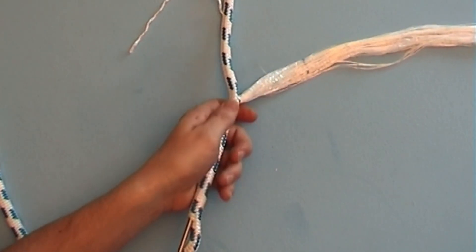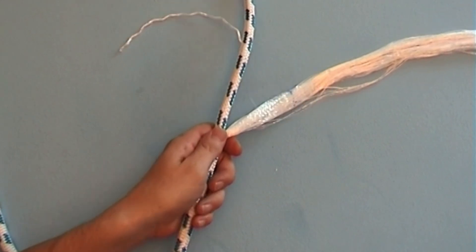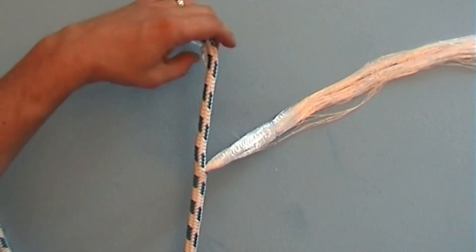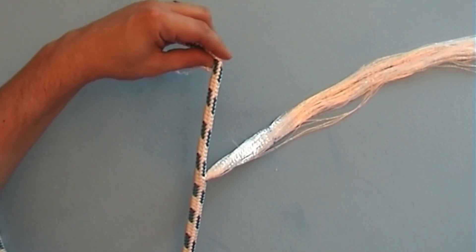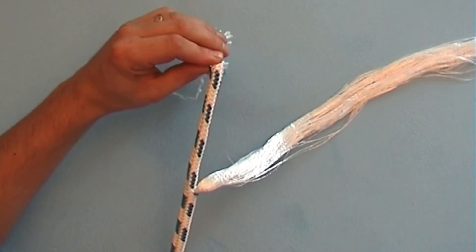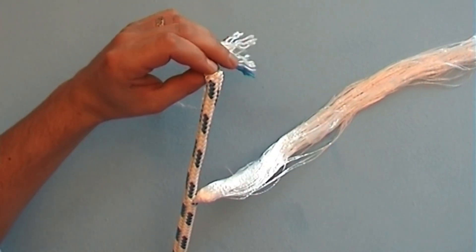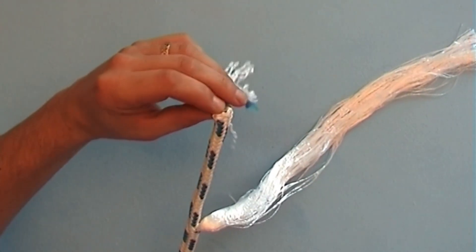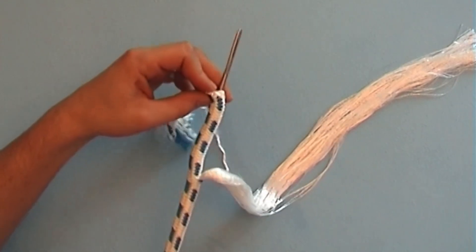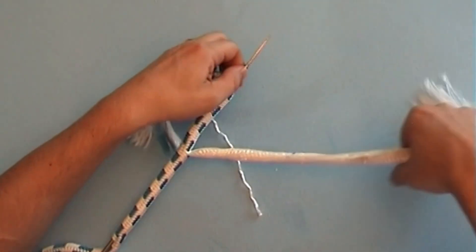Push the splicing needle along carefully up to about one rope diameter behind the cover marker yarn. Come out at that spot. Now thread the complete core onto the splicing needle and pull it through.